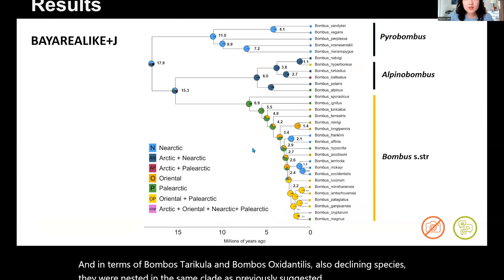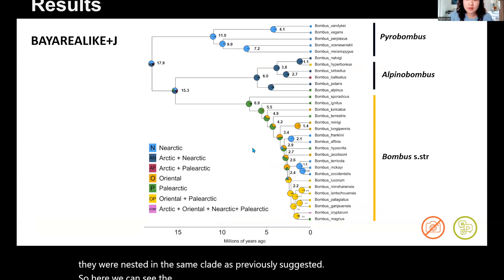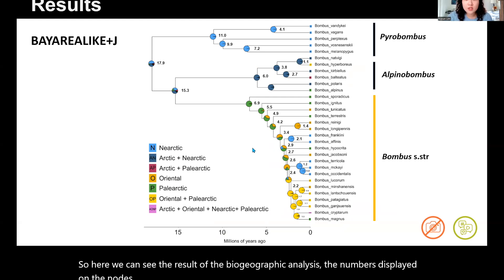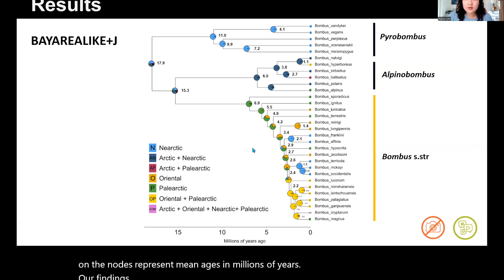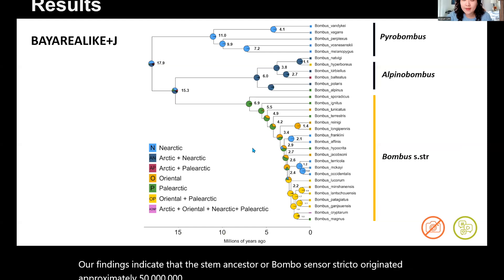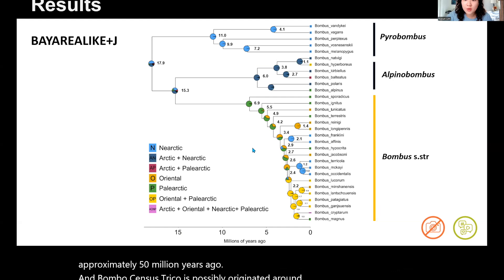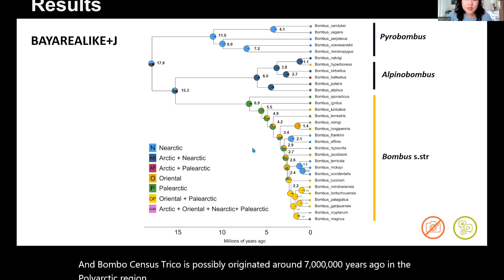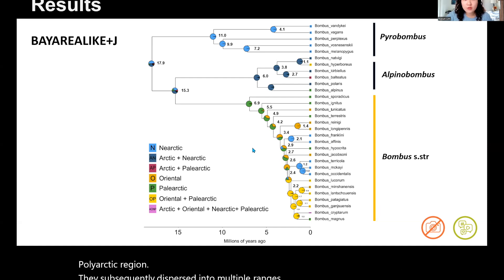Here we can see the result of the biogeographic analysis. The numbers displayed on the nodes represent mean ages in millions of years. Our findings indicate that the stem ancestor of Bombus sensus stricto originated approximately 50 million years ago, and Bombus sensus stricto itself possibly originated around 7 million years ago in the Palearctic region. They subsequently dispersed into multiple ranges, which will be discussed in the upcoming slides.